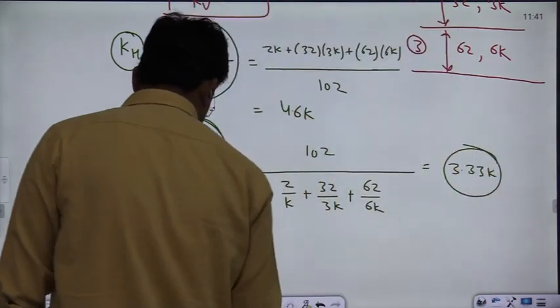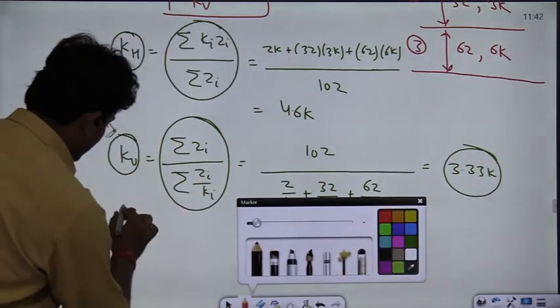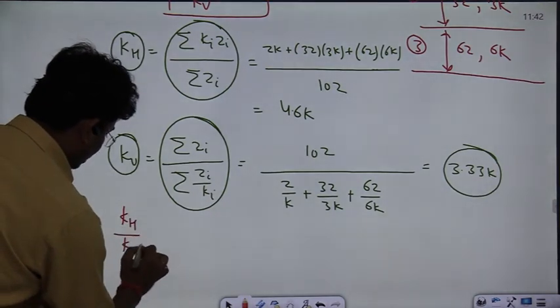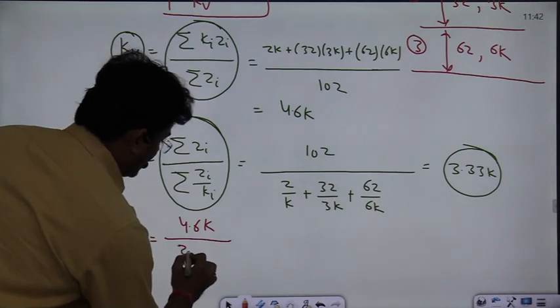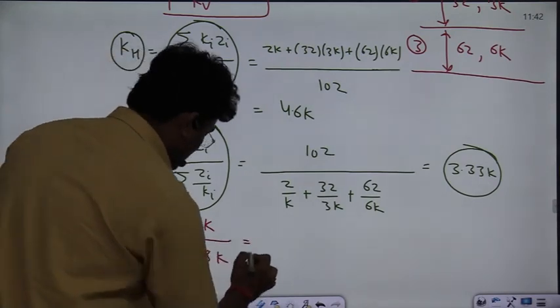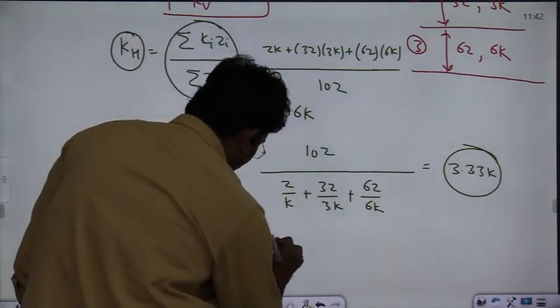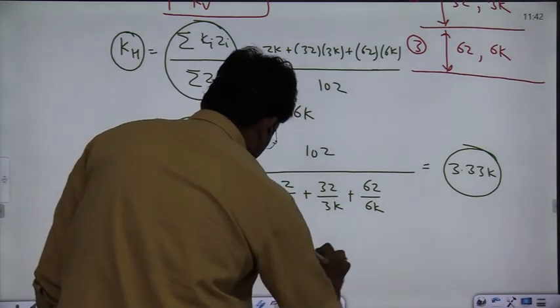So with these two results, kh by kv, that is 4.6k divided by 3.33k, this is coming out to be 1.38. This is the answer for this question.